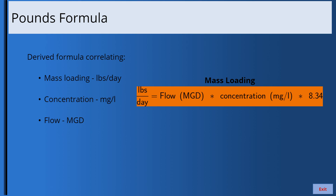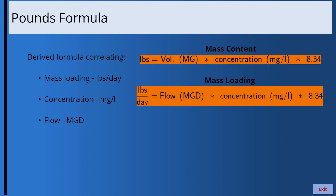With this formula, instead of mass loading in pounds per day, we can calculate the mass content in pounds if, instead of flow in MGD, volume in million gallons is used. The mass formula looks like this: pounds equals volume times concentration times 8.34.